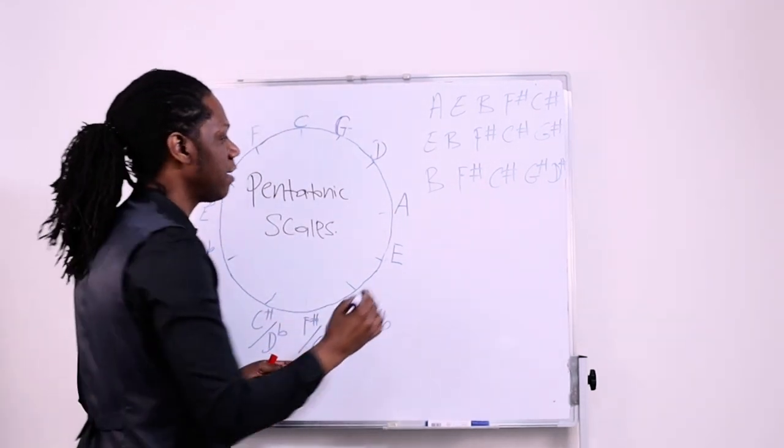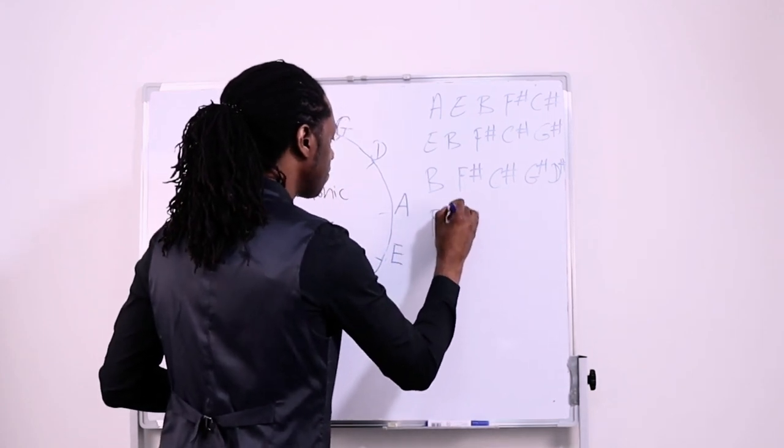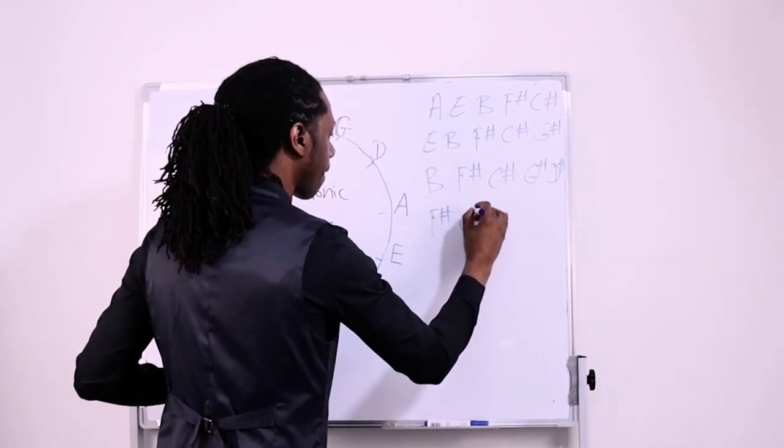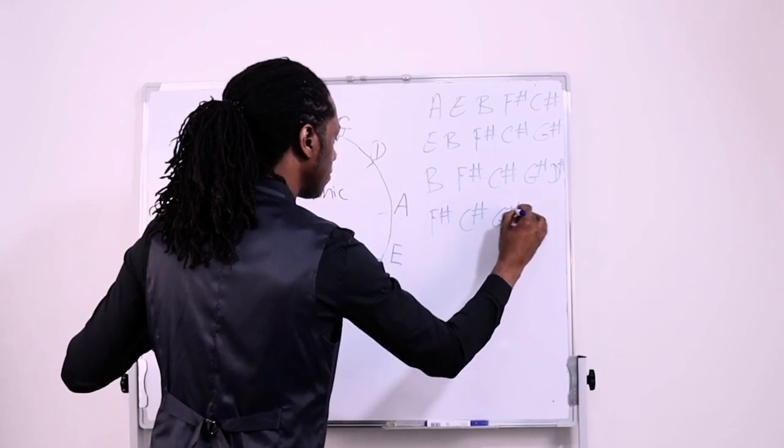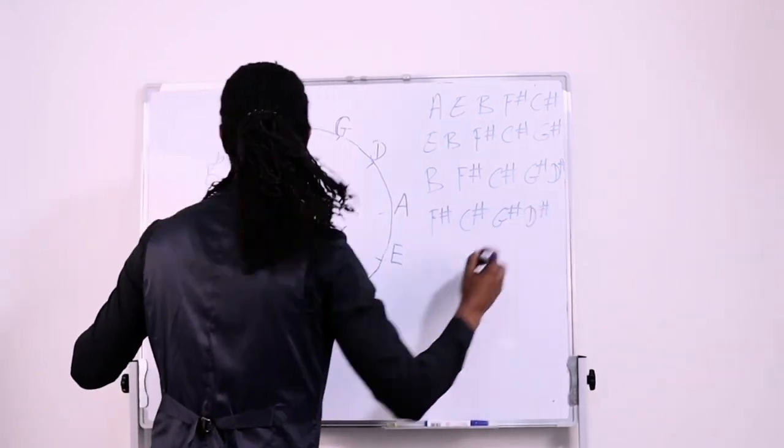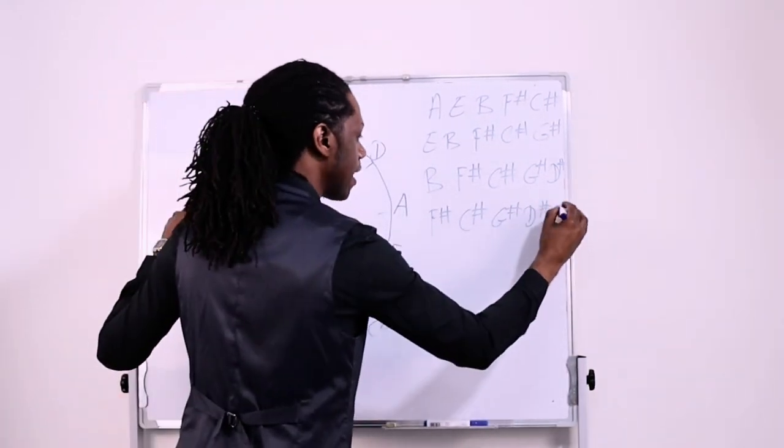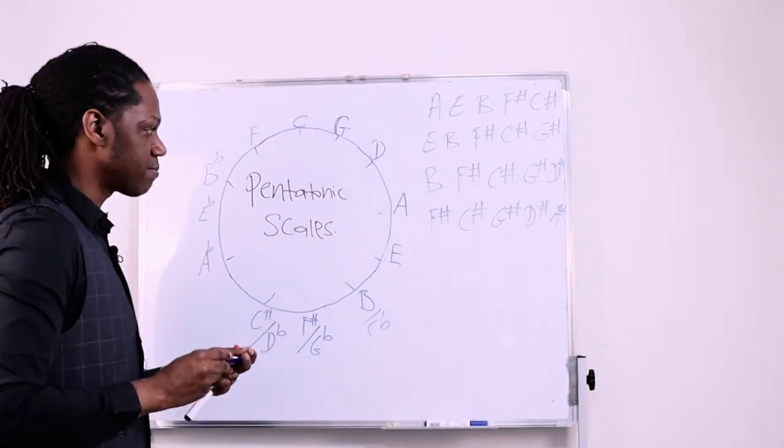How about F sharp? Okay? So we have F sharp, we have C sharp, A sharp is the same as G sharp, B flat is the same as D sharp, and then we have B flat is the same as A sharp because F sharp major has sharps in it.